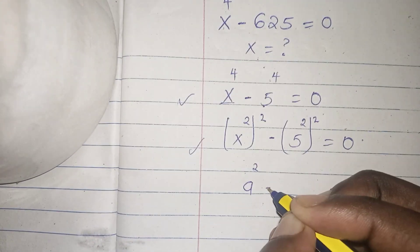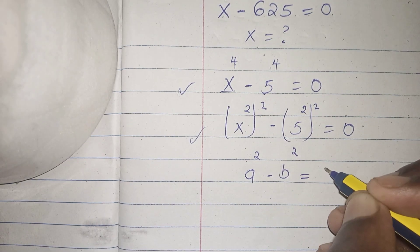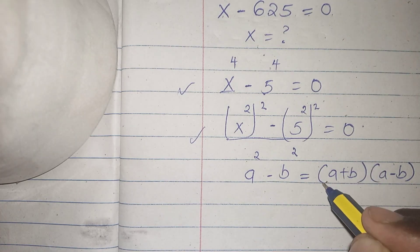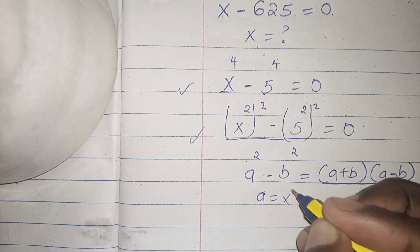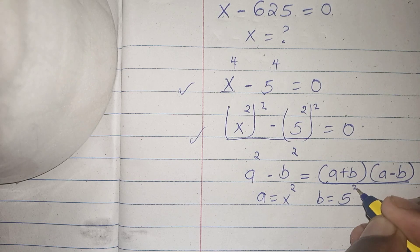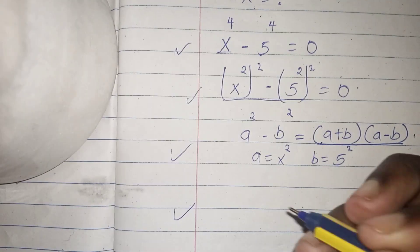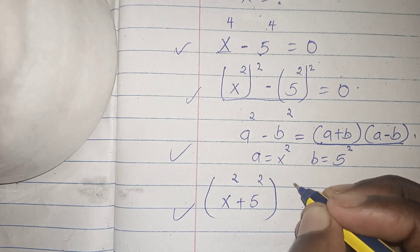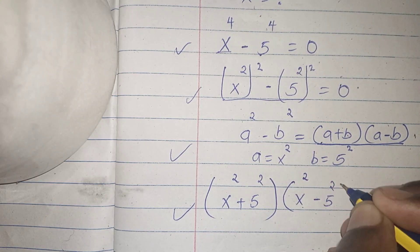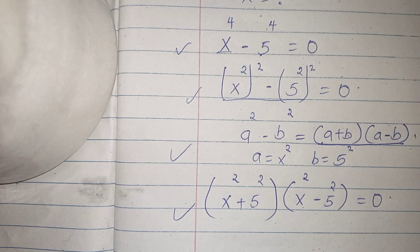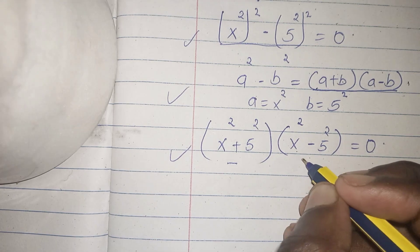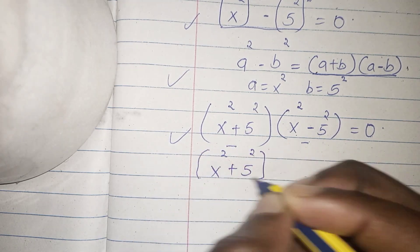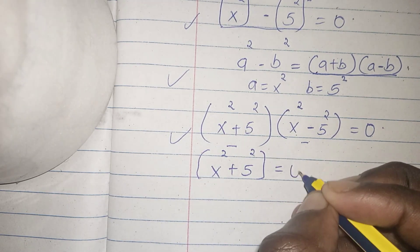You can see this is in the form a squared minus b squared, which we can write as (a + b)(a - b). We're going to express this in that form, where our a is x squared and our b is 5 squared. So we get: (x squared + 5 squared)(x squared minus 5 squared) equals 0.